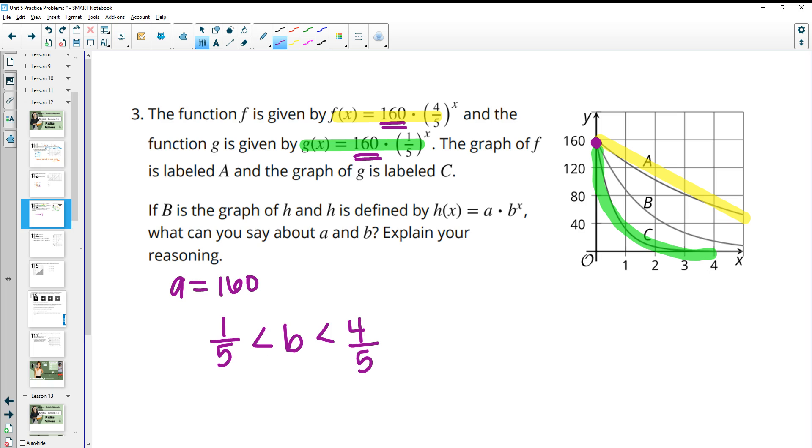So it's somewhere between there. I don't know exactly what it is. You could just make a prediction, so you could just say that b could be approximately two-fifths or three-fifths or something like that. I just would like to say the boundary that it's in between, so it's somewhere above one-fifth and lower than four-fifths.